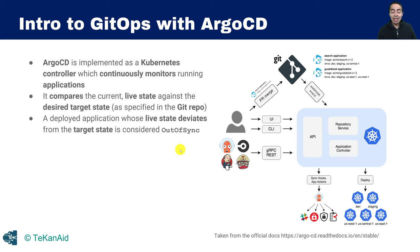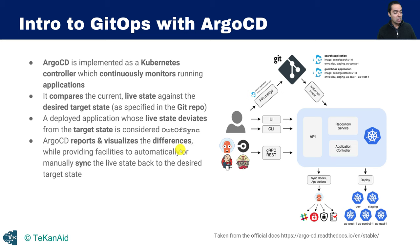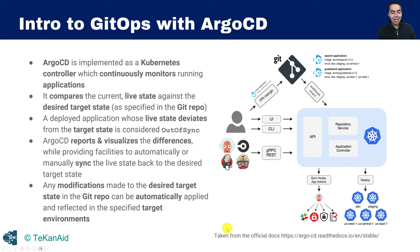A deployed application whose live state starts to deviate from the target state is considered out of sync. You have the option to have auto sync enabled, so it reverts back to your desired state, which is in your Git repository — that's the source of truth — or you can leave it at the default of manual and alert on a deviation. Argo CD reports and visualizes the differences while providing facilities to automatically or manually sync the live state back to the desired target state. Any modifications made to the desired target state in the Git repo automatically get applied and reflected in your target environment.